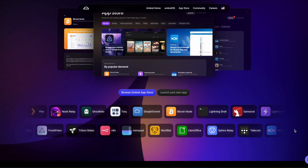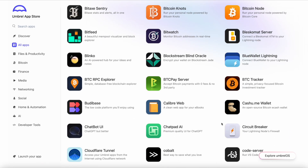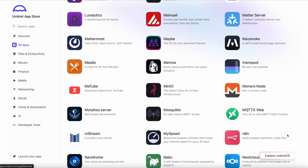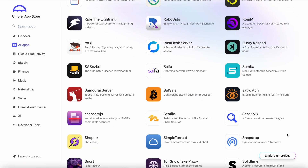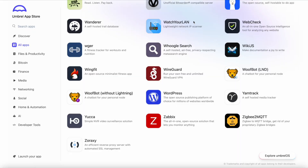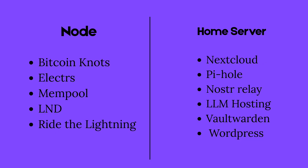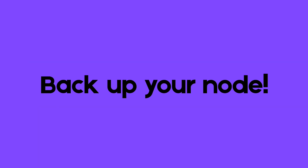One thing I want to mention: even though these personal server platforms are super powerful, it's easy to get carried away. At the end of the day, a Bitcoin node should really just be a node. If you start piling on tons of extra apps, especially on lighter hardware, you run the risk of overloading your system and crashing your server. If you're serious about self-hosting, it's probably smart to have just your Bitcoin node and a separate personal server for everything else. And whatever you do, back up your node — seriously, you don't want to learn that lesson the hard way.